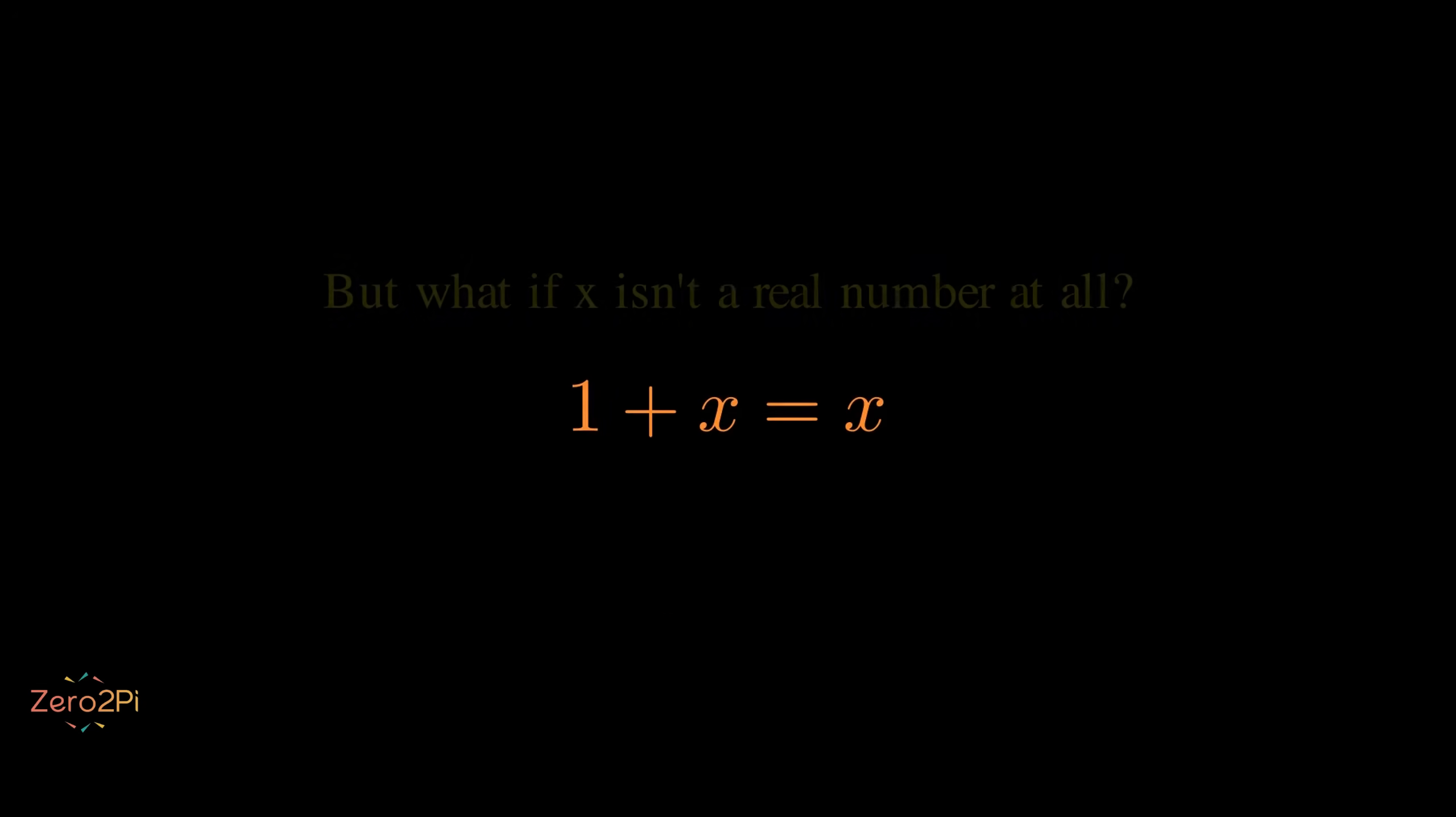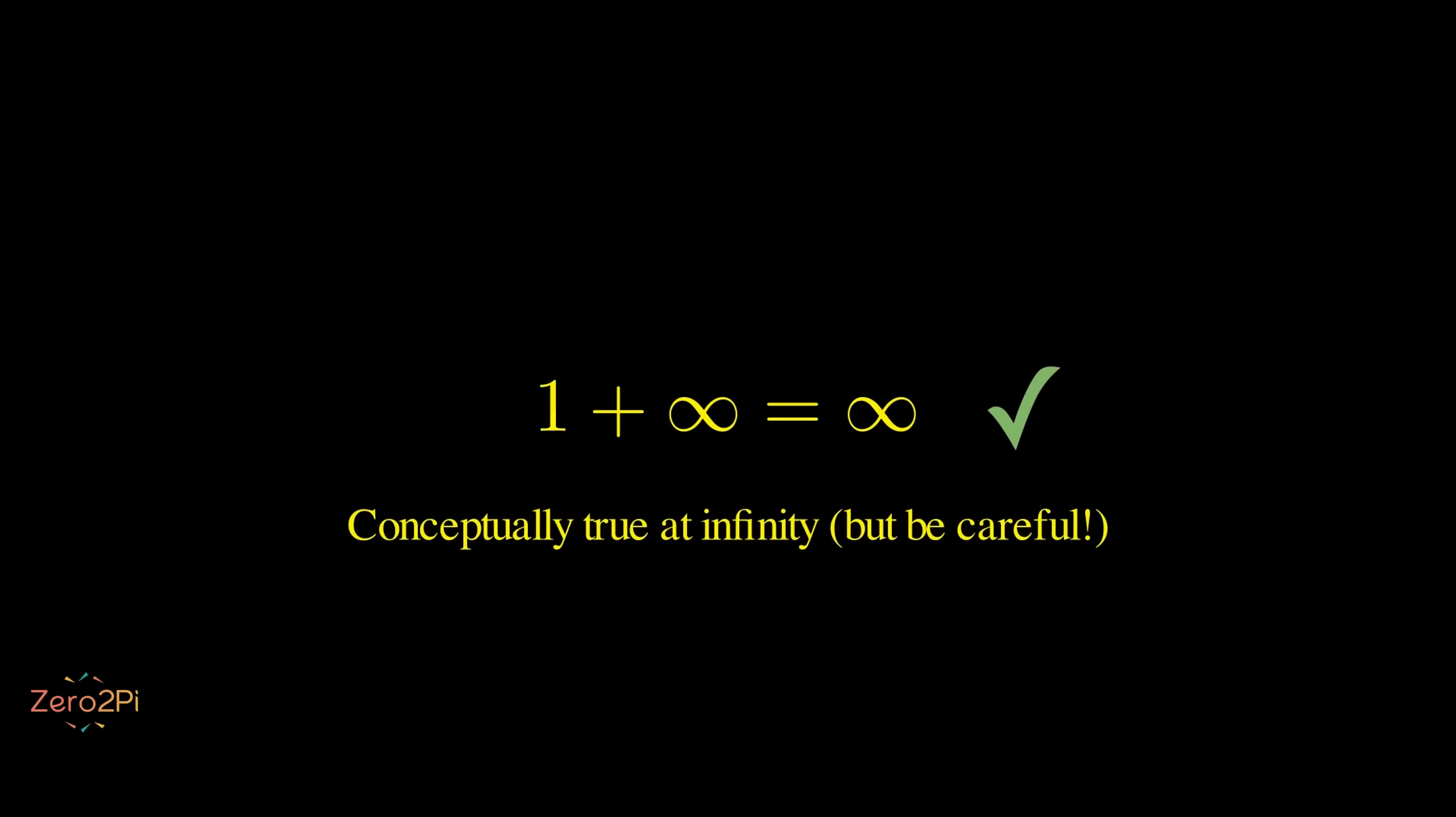What about infinity? What if x is not a real number at all and x approaches infinity? Then 1 plus infinity equals infinity. This seems to work conceptually, since adding any finite number to infinity gives infinity.